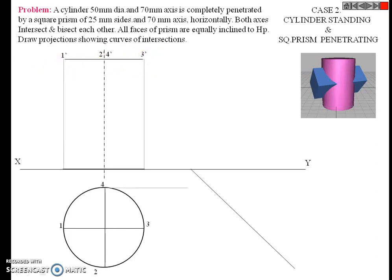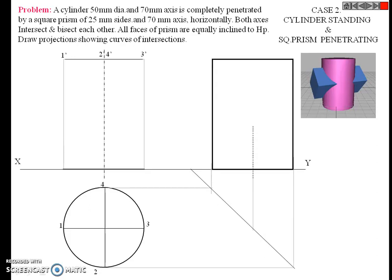Draw the side view. Draw a 45-degree line, then take the projection of the top view to the 45-degree line, and from that take the projection into the side view. Then draw the center line.